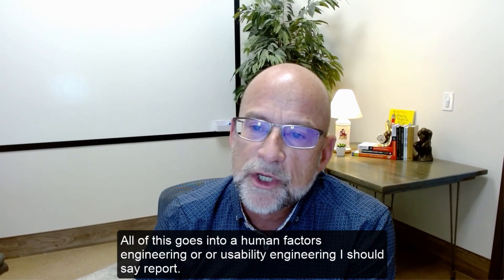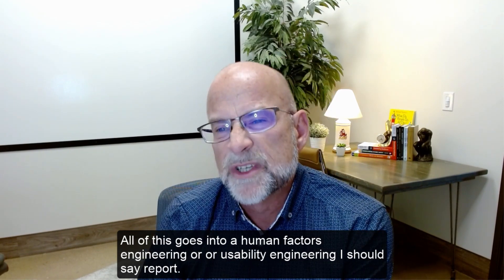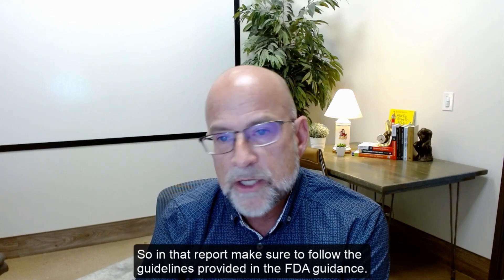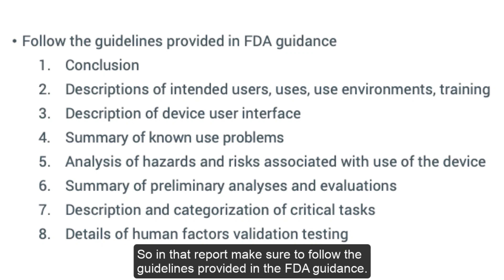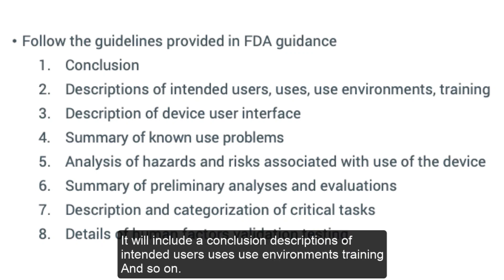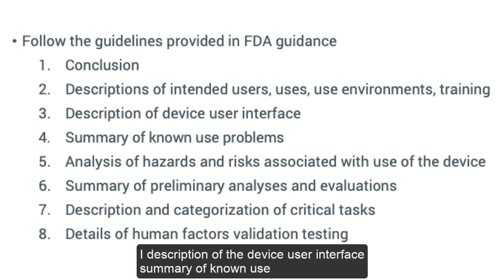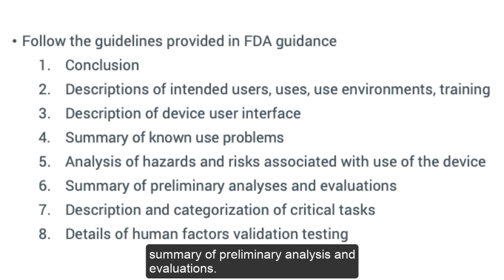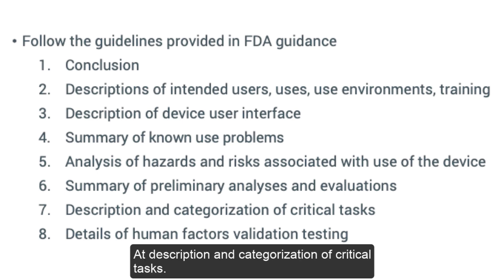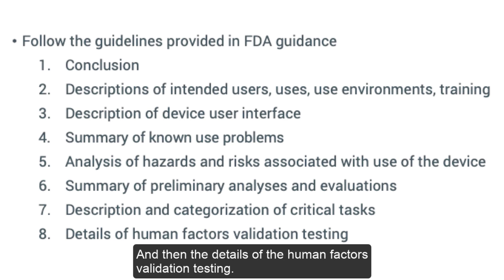All of this goes into a usability engineering report. Make sure to follow the guidelines provided in the FDA guidance. The report will include: a conclusion, descriptions of intended users, uses, use environments, training; a description of the device user interface; a summary of known use problems; an analysis of hazards and risks; a summary of preliminary analyses and evaluations; a description and categorization of critical tasks; and the details of the human factors validation testing.